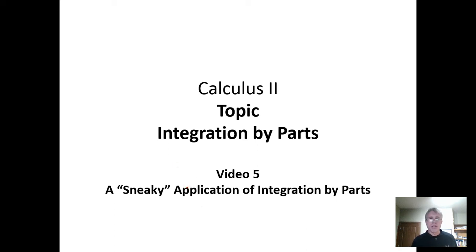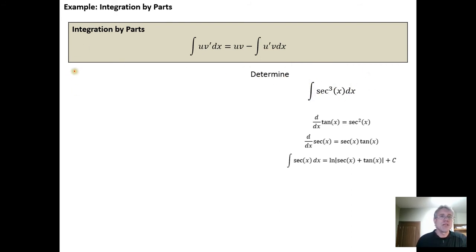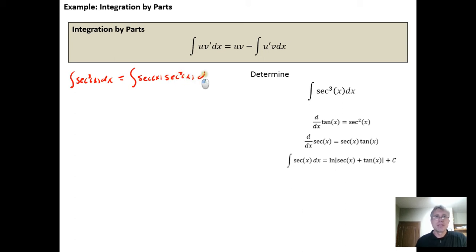In this video we're going to do an application using integration by parts where it's not so obvious that it's going to work. This is one where it'd be easy to get stuck and think you were going in the wrong direction when in fact things are going well. We want to integrate the secant cubed of x dx, and the idea is we can look at this as being two separate functions. We can rewrite the secant cubed as the secant of x times the secant squared of x dx, and then we can do integration by parts.